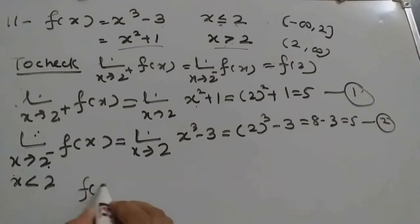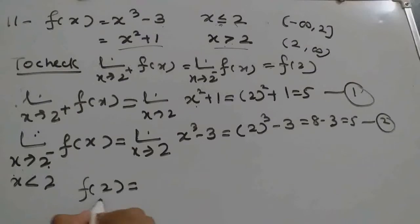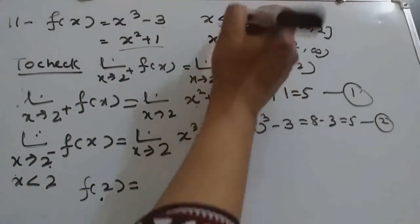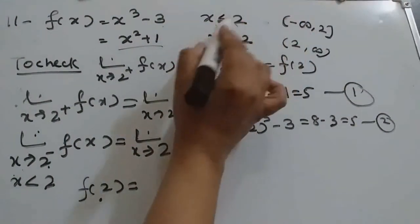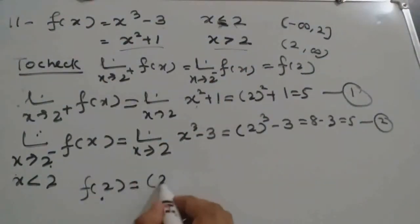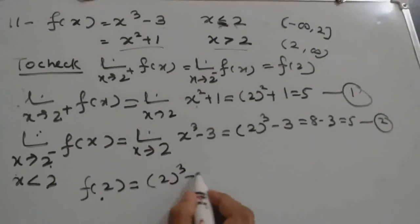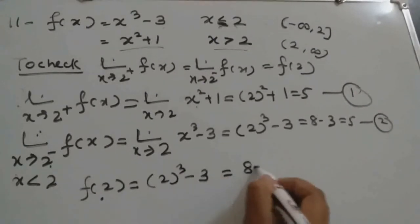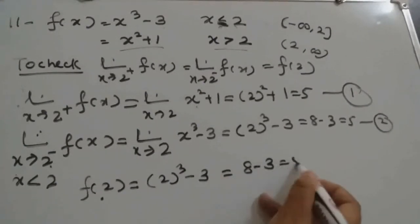Now we find f(2). Since x equals 2, the equal to sign applies to the first function. So directly, 8 minus 3 equals 5. This is equation 3.